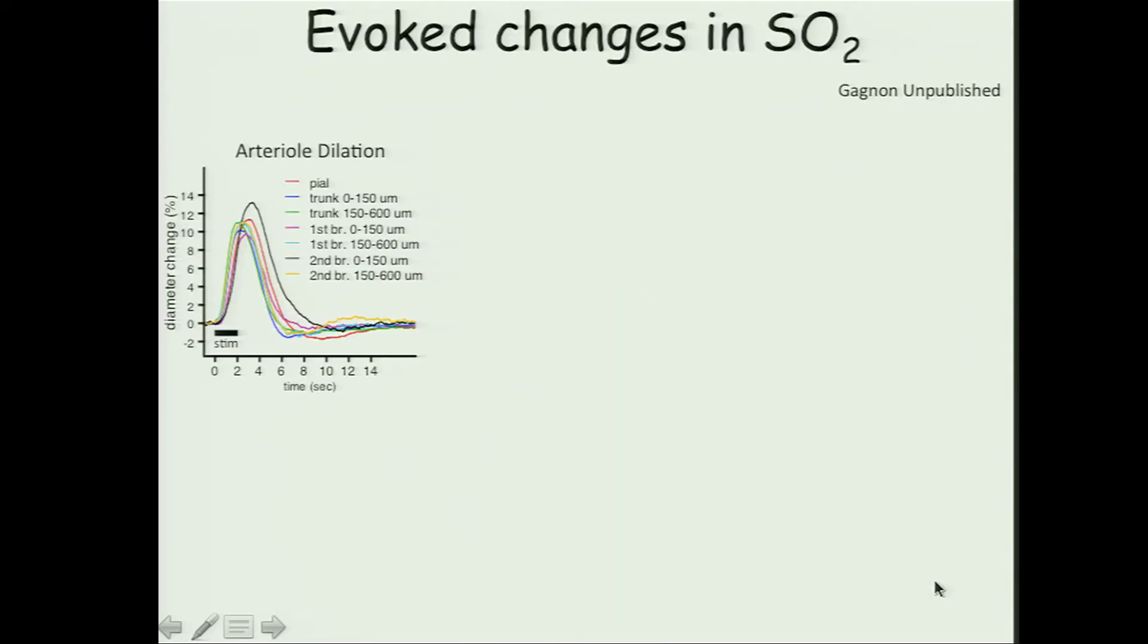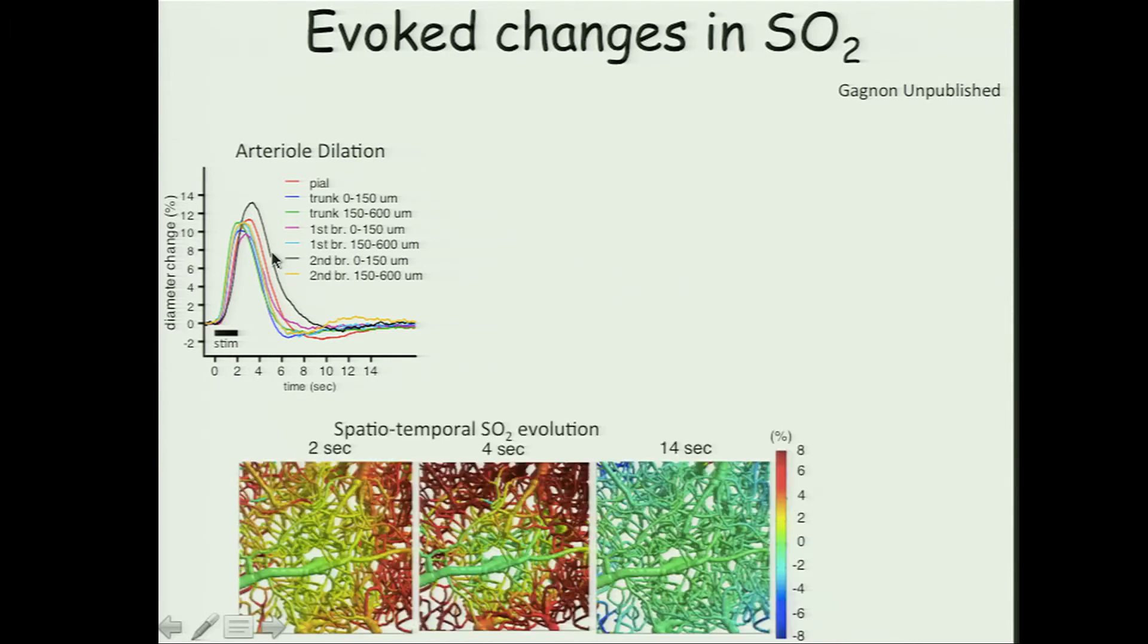Now we can take independent measurements of how the cerebral arteries respond to brain activation. We do this with two-photon microscopy during sensory stimulation in rodents. We can see this arterial dilation that we can put into our model and simulate how the oxygenation in the brain is going to respond to this brain activation task.